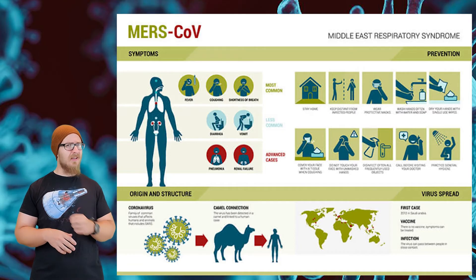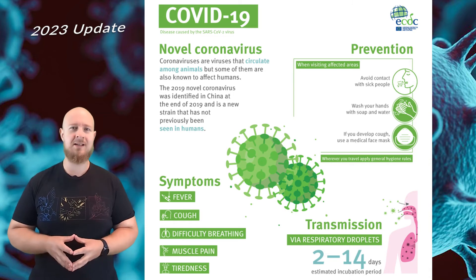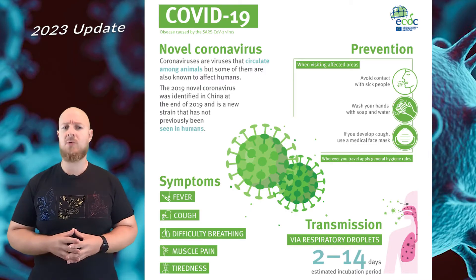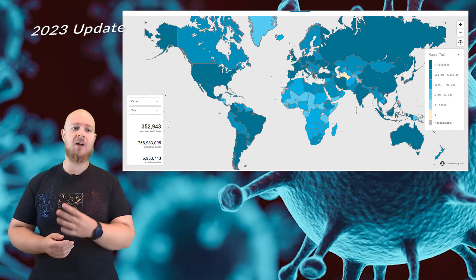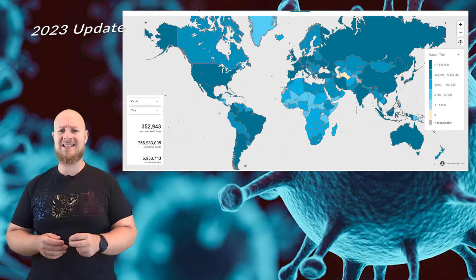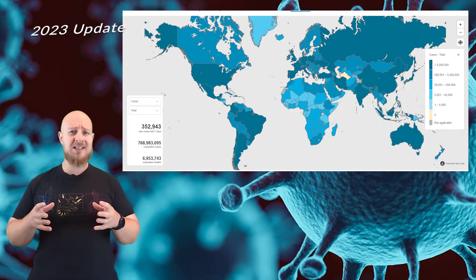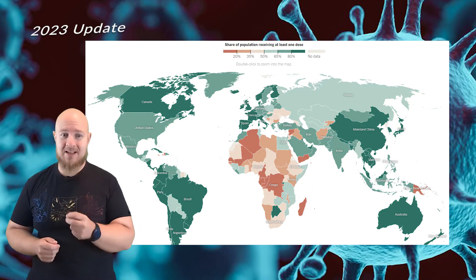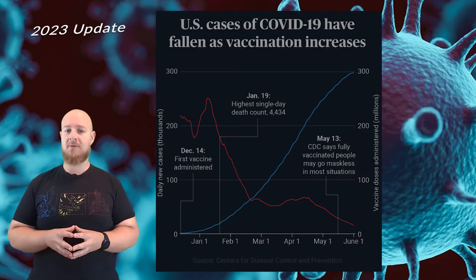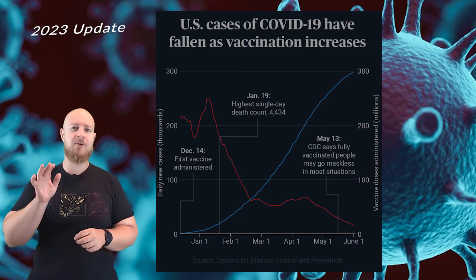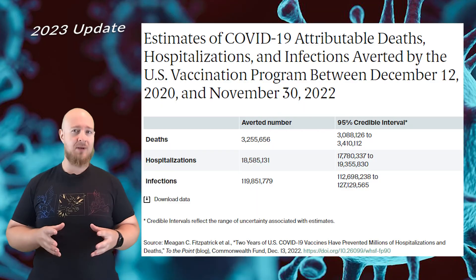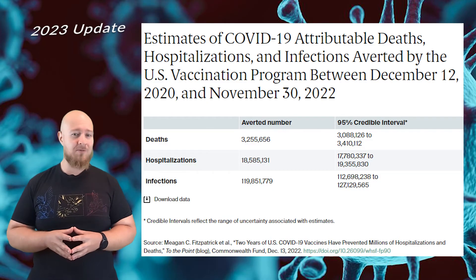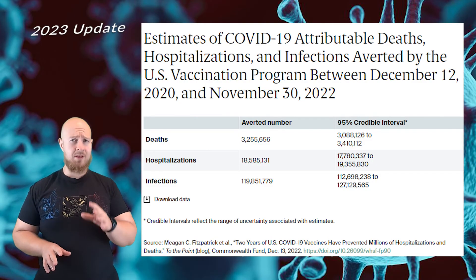SARS-CoV-2, or COVID-19, is a respiratory illness caused by a coronavirus. It was first detected in China in December of 2019 and has since spread throughout the entire world. As of August 2023, there were a total of 769 million cases around the world with nearly 7 million deaths. However, according to the World Health Organization, about 13.5 billion vaccine doses have been administered globally, which reduced confirmed cases by 94% in just the first five months since the vaccine was made available. A 2022 study by the Commonwealth Fund estimated that in the U.S., just two years after the vaccine was administered, it had prevented 13 million hospitalizations and more than 3 million deaths.